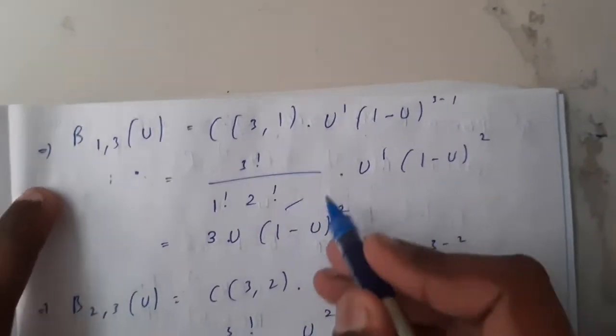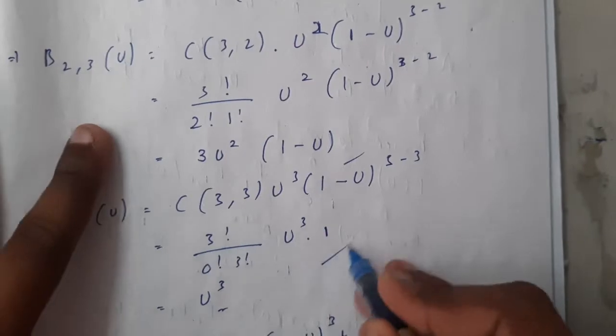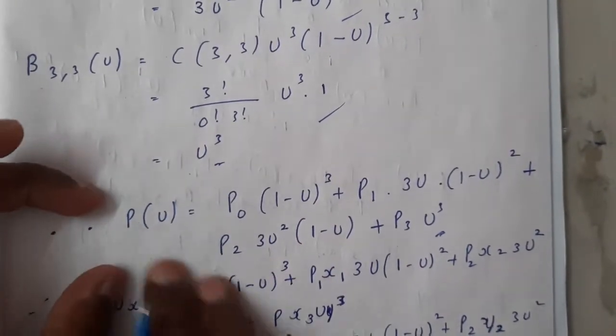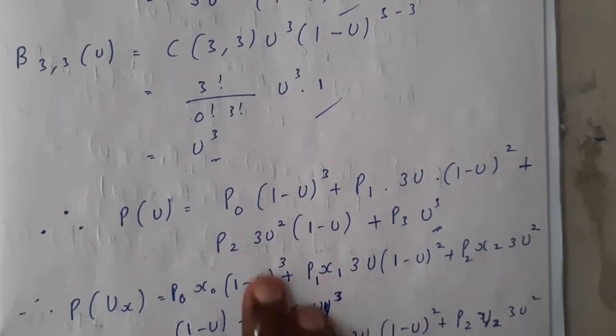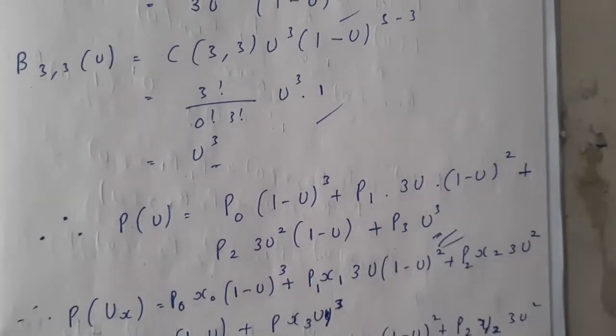Similarly you'll be doing for others also. Here you got in this way, here you got this. So once you got all the things, you'll be substituting that in P(u).